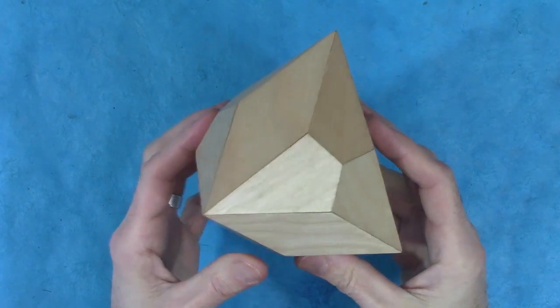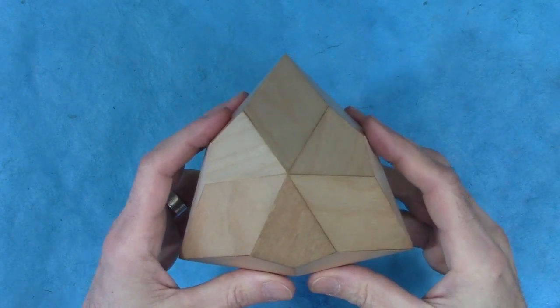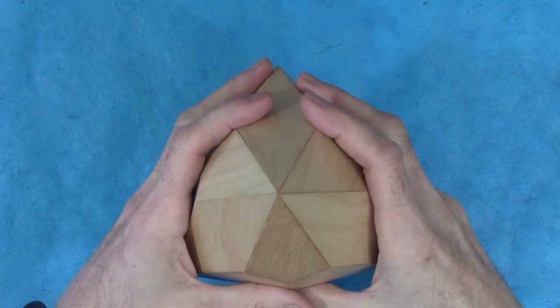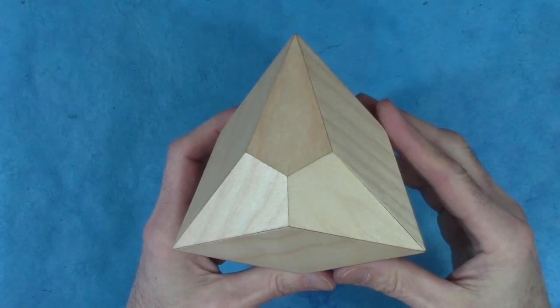I laser-cut the individual faces, beveled the edges, and glued them together. You can see it has these four six-sided peaks. There are also four of these flatter regions where three kites come together.